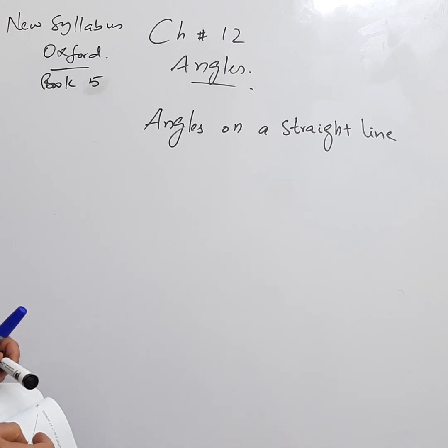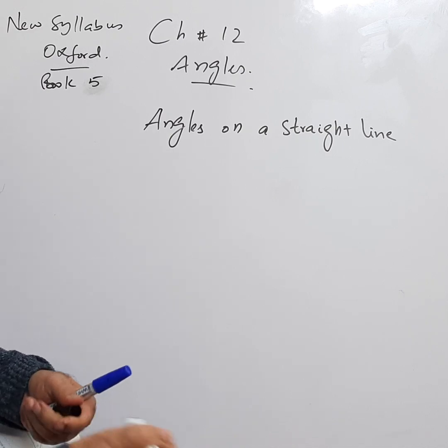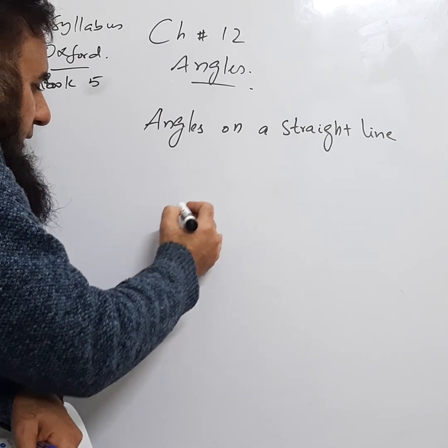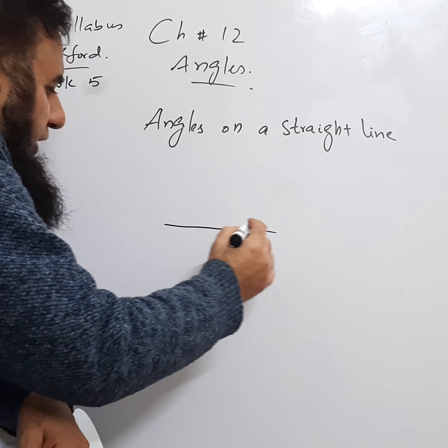We are studying angles on a straight line, Chapter 12 Angles, from the New Syllabus Oxford Book 5. We have studied this and now we will repeat that angles on a straight line equal 180 degrees.